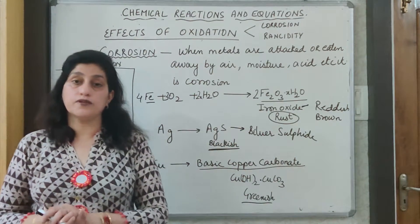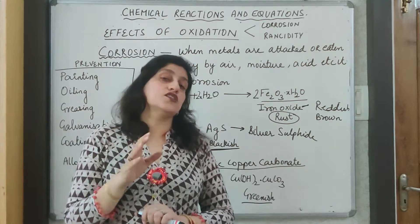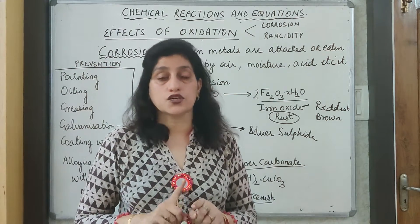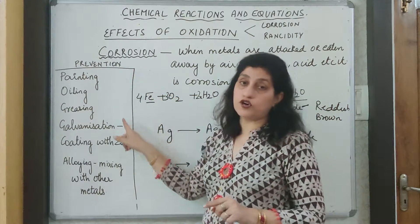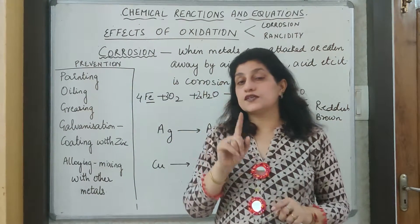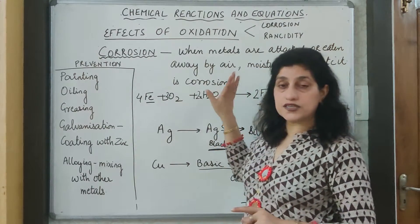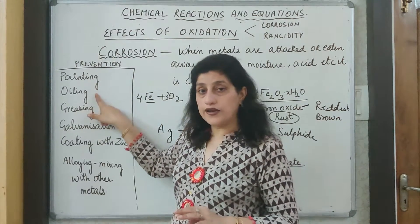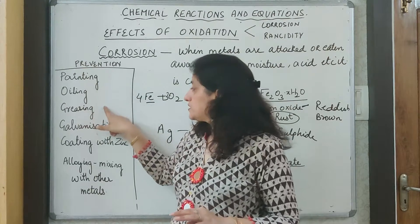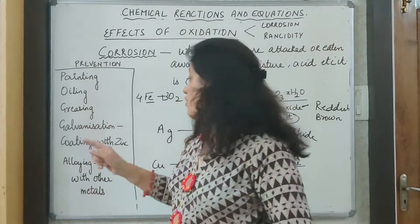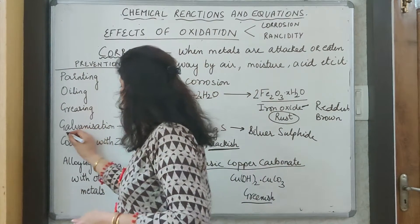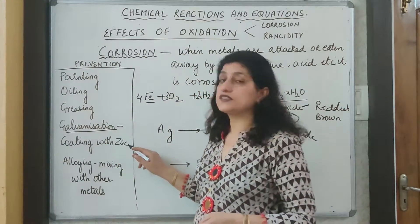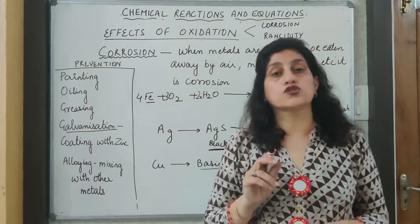Corrosion is an unwanted phenomenon that results in degradation of the quality of the metal. Therefore it must be avoided and all measures should be taken to prevent it. We can paint the metal surface so that it does not come in direct contact with air and moisture, and hence the metal surface is protected and does not corrode. Similarly, we can do oiling or greasing to avoid contact. One more method is galvanization — coating the iron metal surface with zinc — which prevents corrosion of iron.